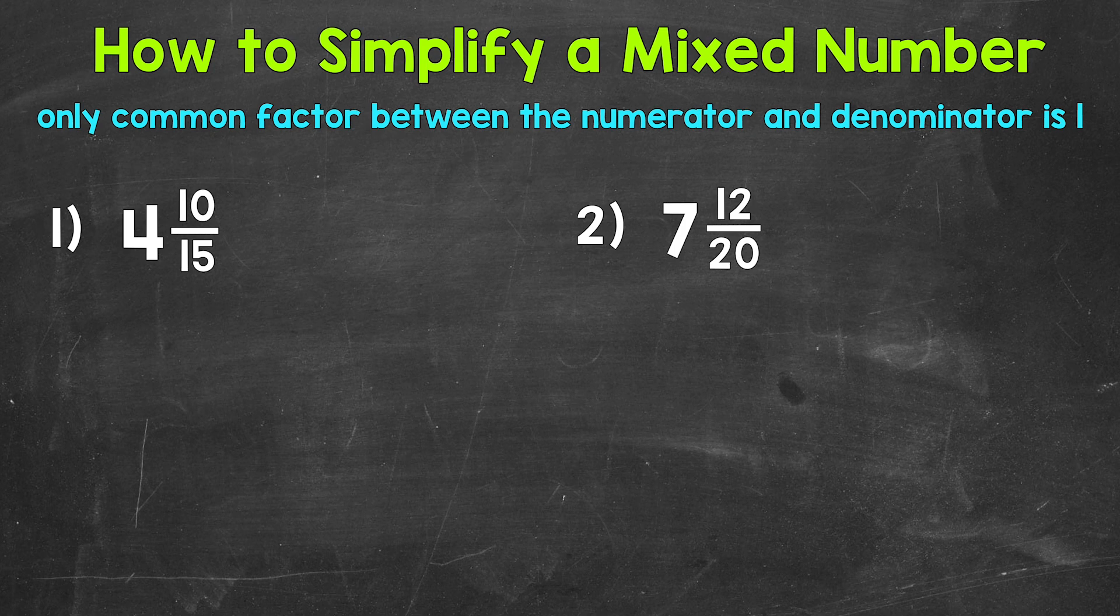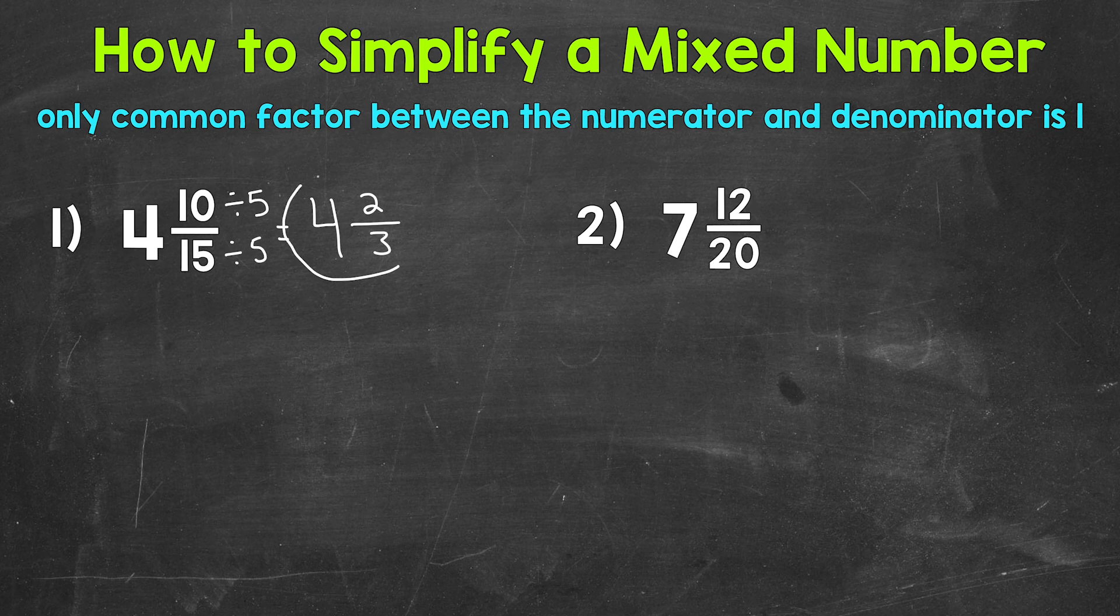What can we divide 10 and 15 by? Well, 5. So let's divide the 10 and the 15 by 5. And this is going to equal 4 and, well, 10 divided by 5 is 2. 15 divided by 5 is 3. Two-thirds, the only common factor between 2 and 3 is 1. So this is in simplest form.